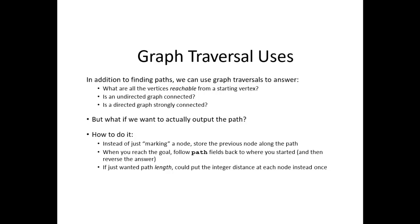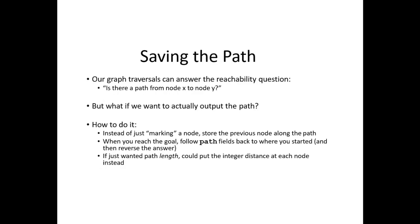The use of graph traversal. We can use graph traversal to answer: what are the vertices reachable from a starting vertex? Is the graph connected? Is the graph still connected? But what if we want to actually output that path? Instead of marking, we can store the next node along the path. When you reach the goal, you have to follow the path field back to where we started and reverse the answer. If we just want the path length, we could put an integer distance field instead of a pointer. A graph traversal can answer the reachability question: is there a path from X to Y? But what if we want to output the path? Instead of just marking a node, of course we have the main idea to output directly the node, but it's way better to do this: We have to store the previous node along the path. When we reach that goal, we have to follow the path back when we started with the main root vertex. With just the path length, we could put an integer distance field instead.